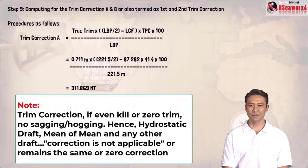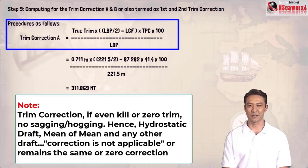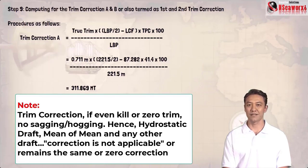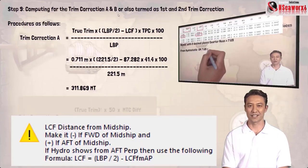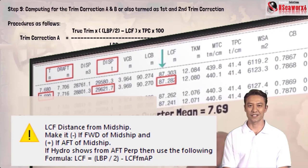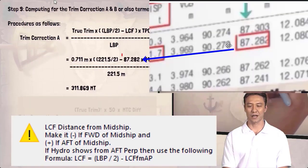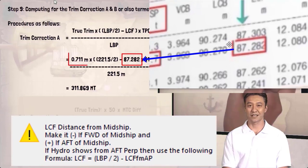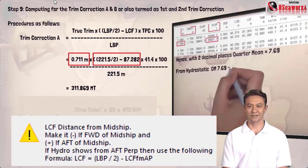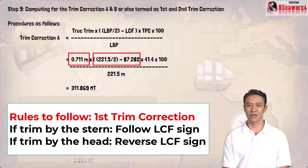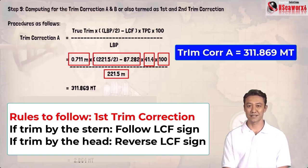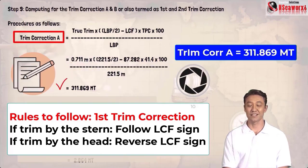Step 9: computing trim corrections A and B. Trim correction A formula: true trim times (LBP divided by 2 minus LCF) times TPC times 100, divided by LBP. LCF is 87.282. So: 0.711 times (221.5 divided by 2 minus 87.282) times 41.4 times 100, divided by 221.5 — giving trim correction A = 311.869 metric tons.